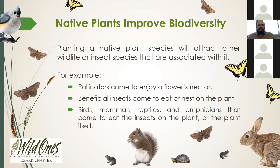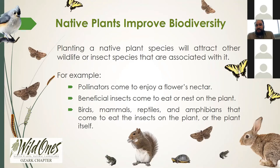Native plants improve biodiversity. Planting a native plant species is going to attract other wildlife and insect species associated with it — everything from pollinators that come to enjoy the plant's nectar, to other beneficial insects that may come to eat or nest on the plant. Then you're going to get birds, mammals, reptiles, and amphibians that come to eat the insects on the plant or the plant itself. So native plants really do form the base of the food web in natural ecosystems.